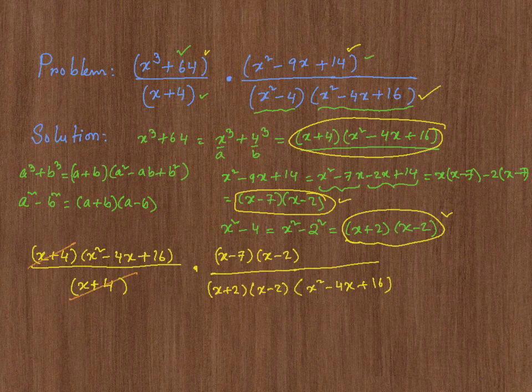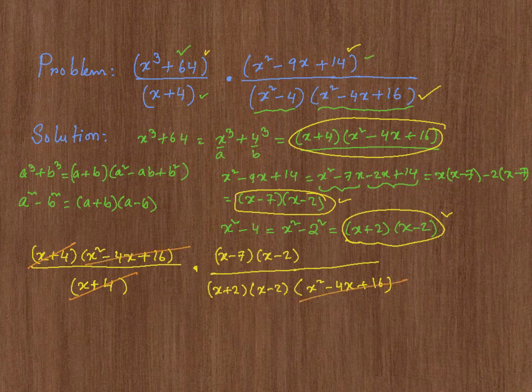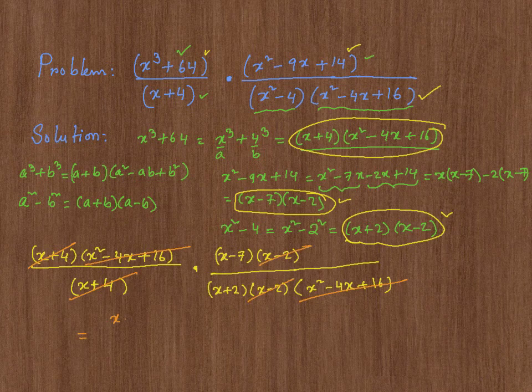So x plus 4, x plus 4, cancel out, x squared minus 4x plus 16, x squared minus 4x plus 16, cancel out. Then x minus 2, x minus 2, cancel out. Then we are left with x minus 7 divided by x plus 2.